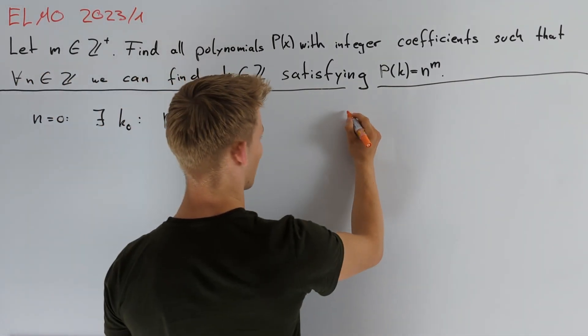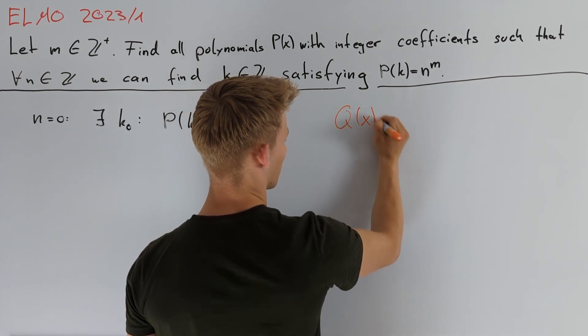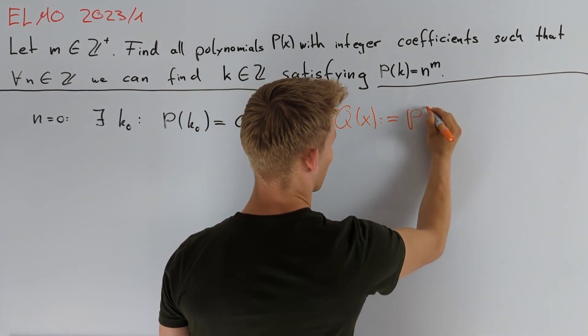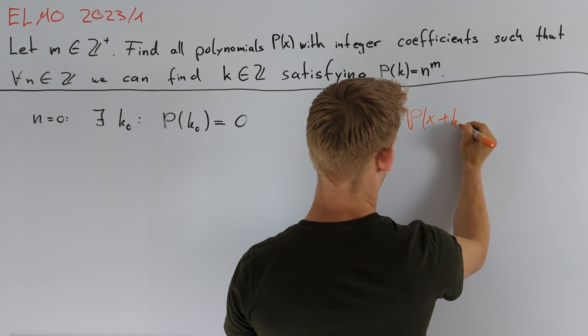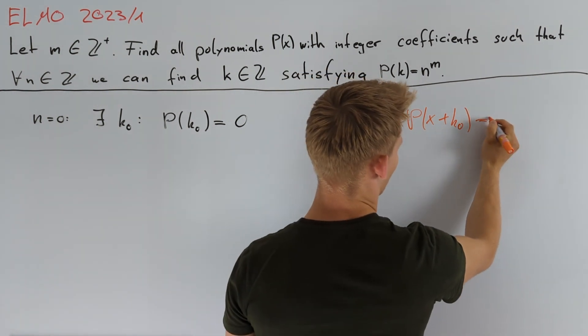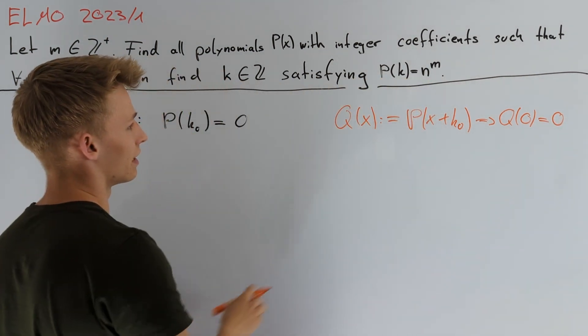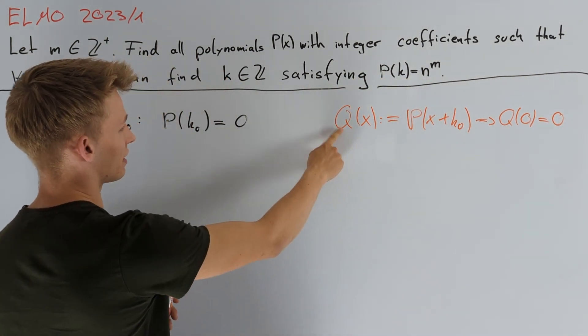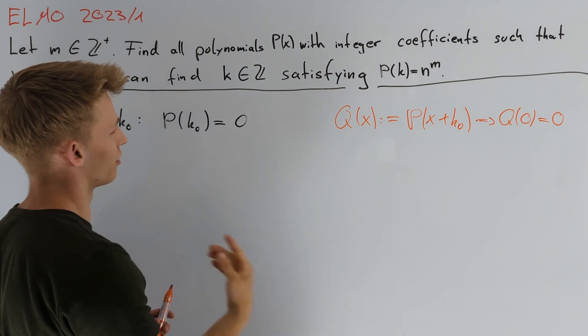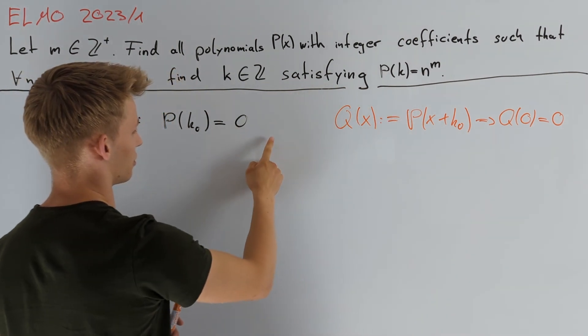To simplify the notation I want to define the polynomial Q(x) to be equal to P(x + k₀). Then we have that Q(0) equals zero and we clearly see that the polynomial Q satisfies the given condition if and only if P satisfies the conditions.